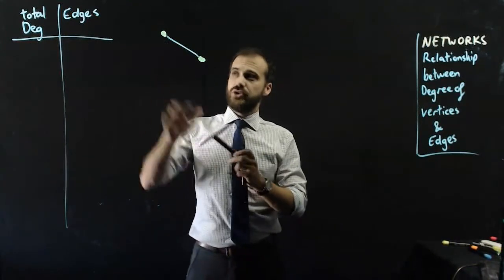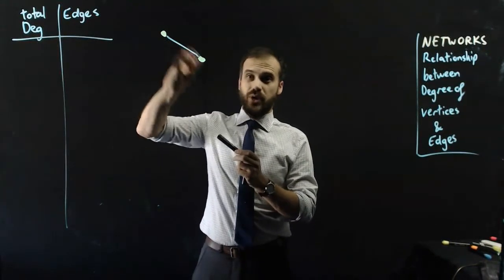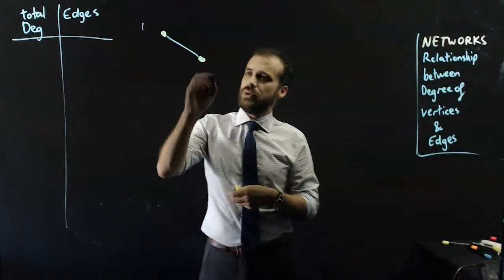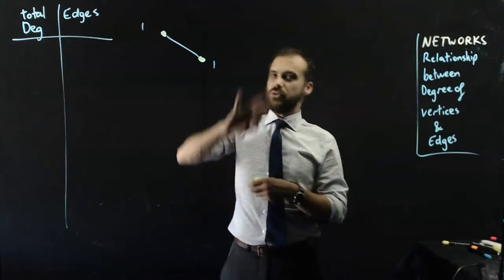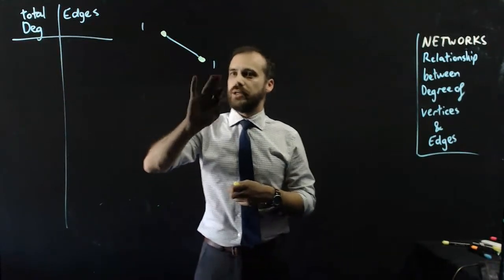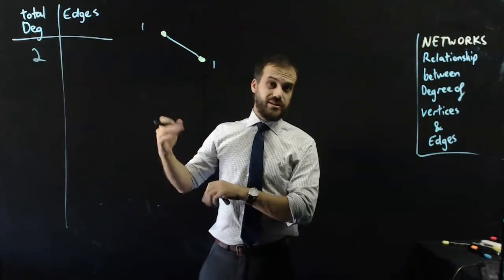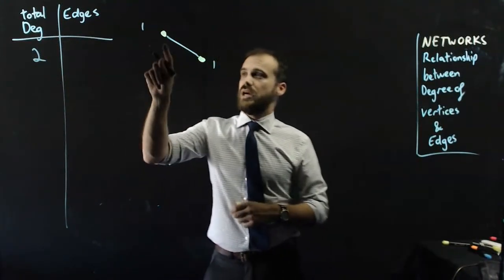Now this has a degree of 1, it has one edge going into that vertex. So I'm just going to write degree 1 there. This one has degree 1 here. So all together in this graph we have degree 1 plus degree 1, we have two total degrees when we add the vertices together. How many edges do we have? We have one road.